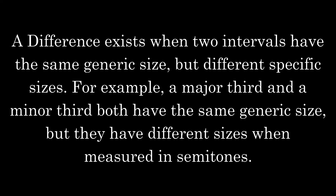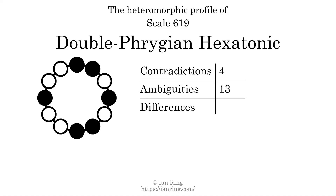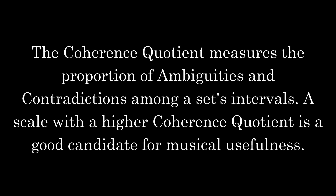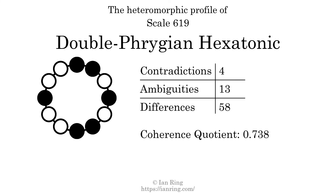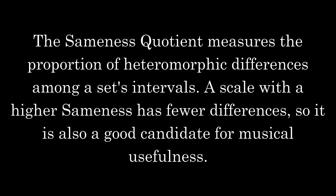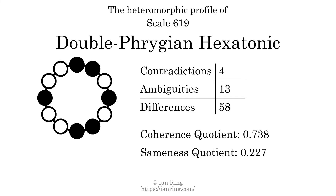A difference exists when two intervals have the same generic size but different specific sizes — for example, a major third and a minor third both have the same generic size but different sizes in semitones. The number of differences in this scale is 58. The coherence quotient measures the proportion of ambiguities and contradictions among a set's intervals; it is 0.738. The sameness quotient measures the proportion of heteromorphic differences; it is 0.227.